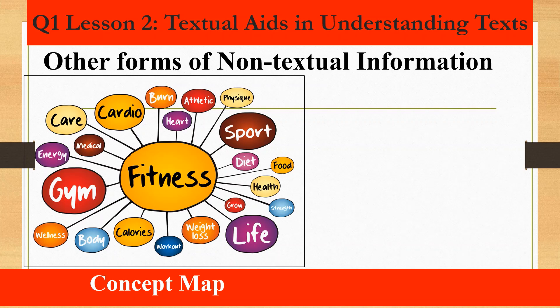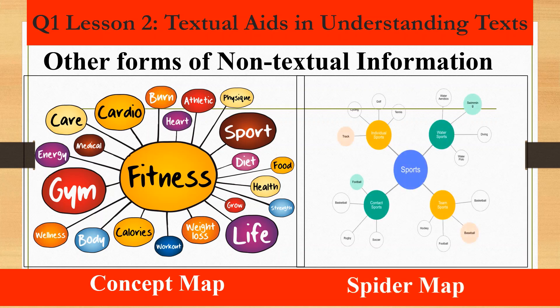Aside from this, we still have other forms or examples of nonlinear information, like the concept map. A concept map is a diagram or graphical tool that visually represents relationships between concepts and ideas. Most concept maps depict ideas as boxes or circles, which are connected with lines or arrows. In the example, the main idea is fitness, and some of the supporting ideas connected to it are gym, sport, diet, and more.